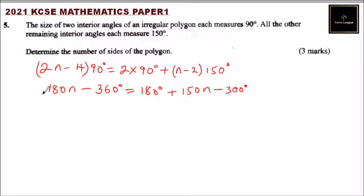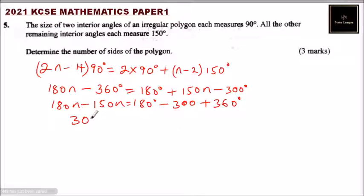We bring 150n to this side, so we have 180n - 150n. We take 360 to the other side, so it equals to 180° minus 300 plus 360°. So this will give us 30n.